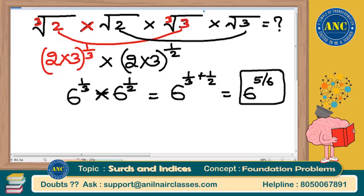Note that the answer need not always be a natural number. In this case we got 6 power 5 by 6, which is itself a surd. There is no rule that the answer must be a rational or natural number every time.